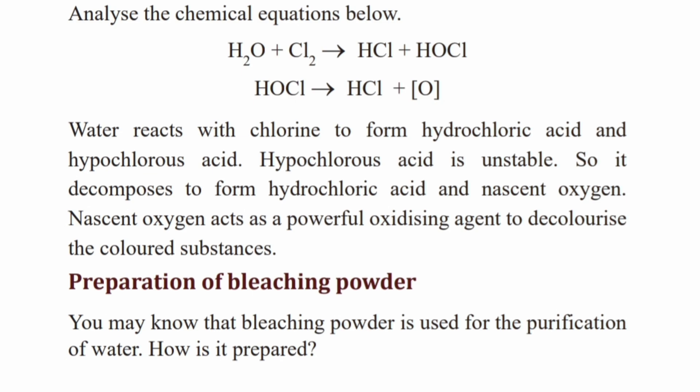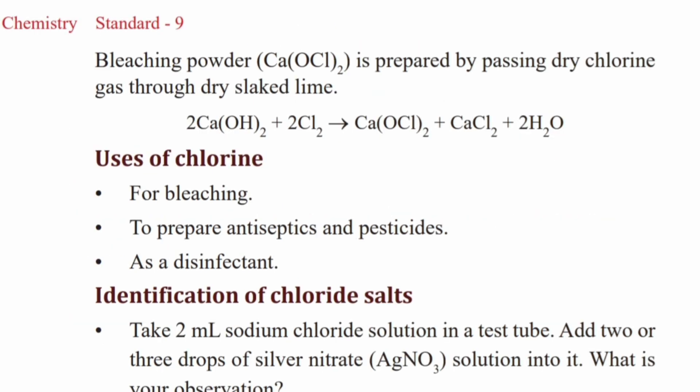Next is the preparation of bleaching powder. Bleaching powder is used for the purification of water. Bleaching powder is prepared by passing dry chlorine gas through dry slaked lime. The chemical formula of bleaching powder is CaOCl2.